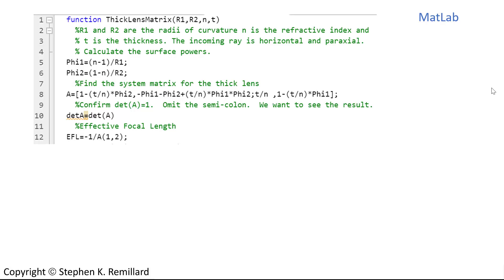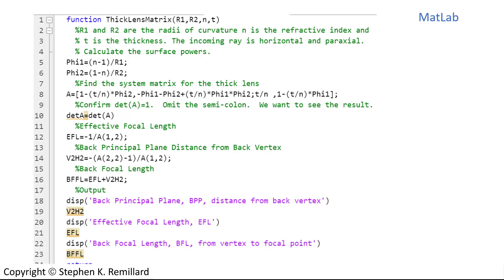The effective focal length is just minus 1 over element A12. The distance from the back principal plane to the back vertex can be calculated from those elements as is the back focal length. And then I'll put them to the screen.